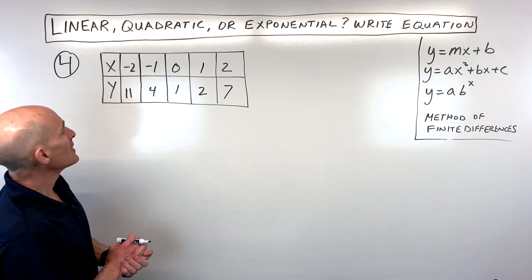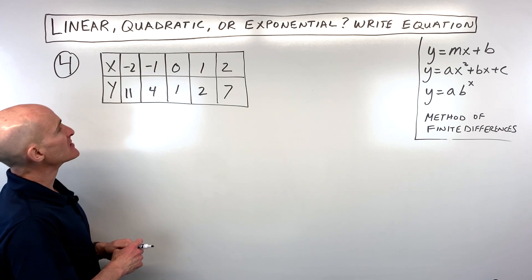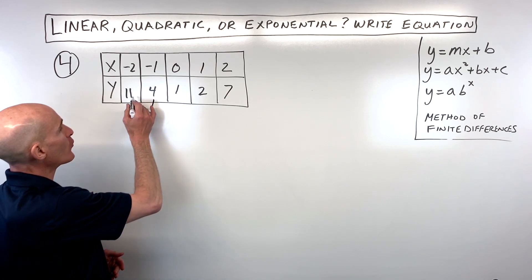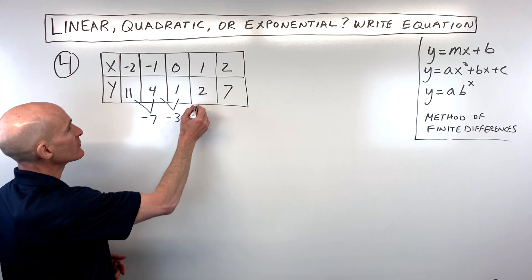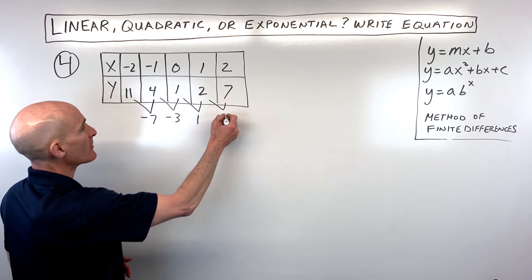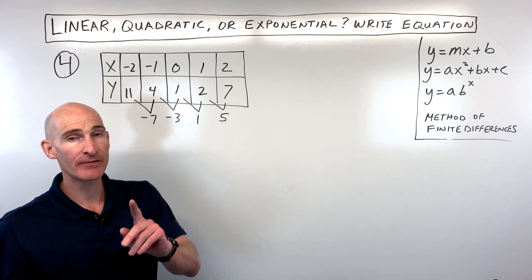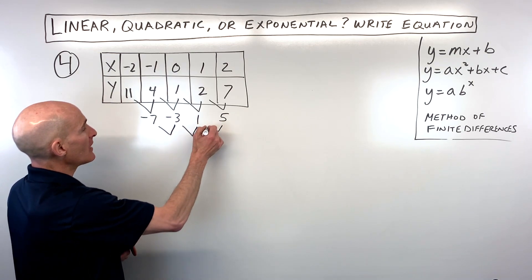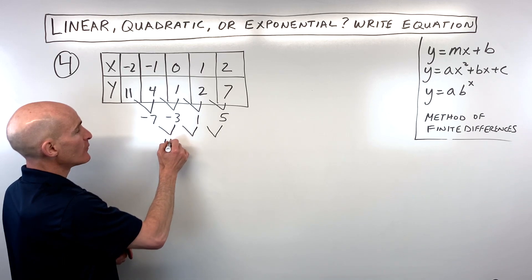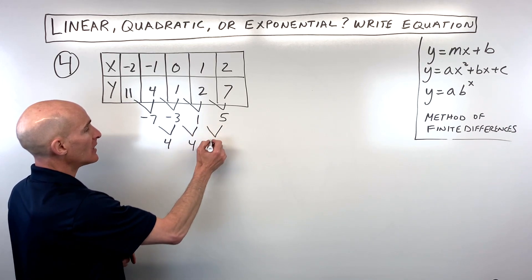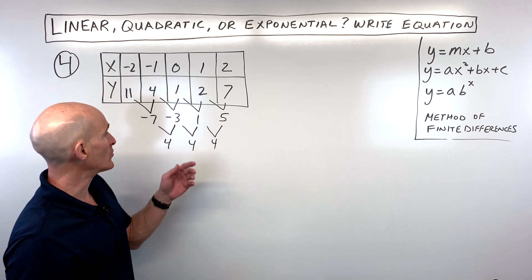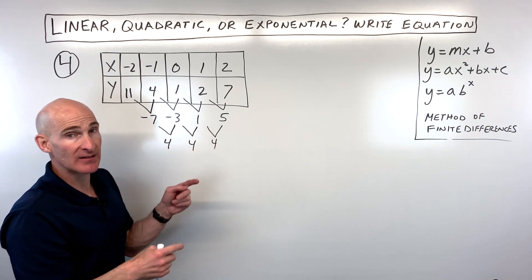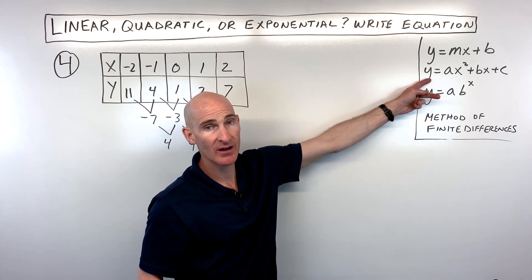Let's dive into example number 4. Using the method of finite differences: 4 minus 11 is negative 7, 1 minus 4 is negative 3, 2 minus 1 is 1, and 7 minus 2 is 5. We didn't get the same number the first time, so it's not a first degree linear equation. Subtracting a second time: negative 3 minus negative 7 is 4, and we keep getting the same number. That tells us it's a second degree quadratic equation.